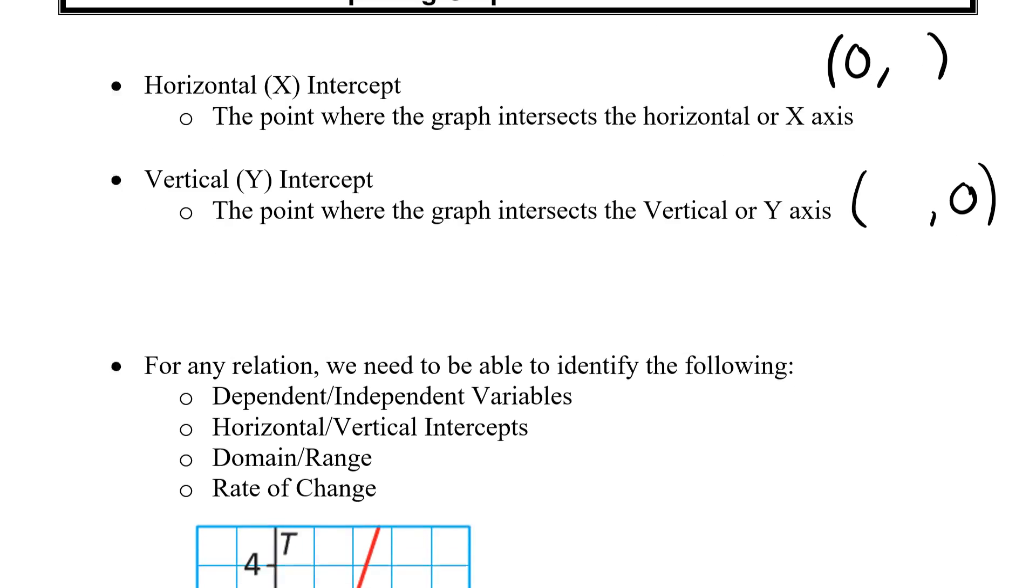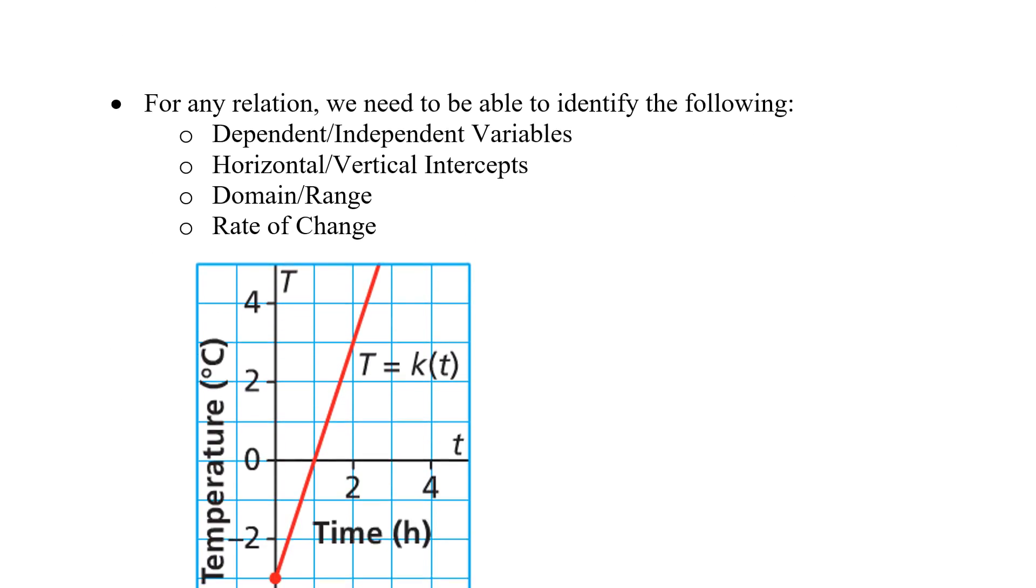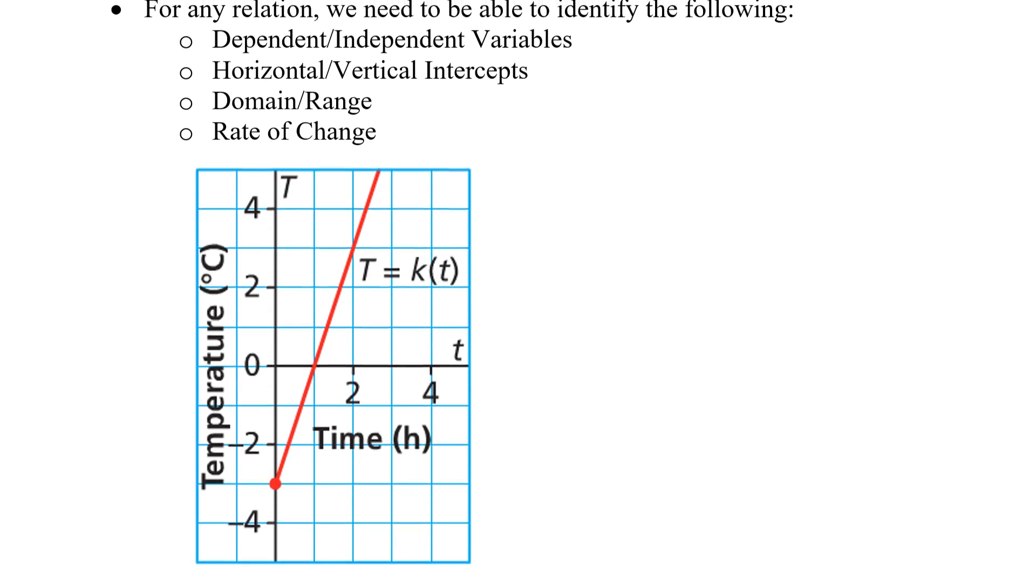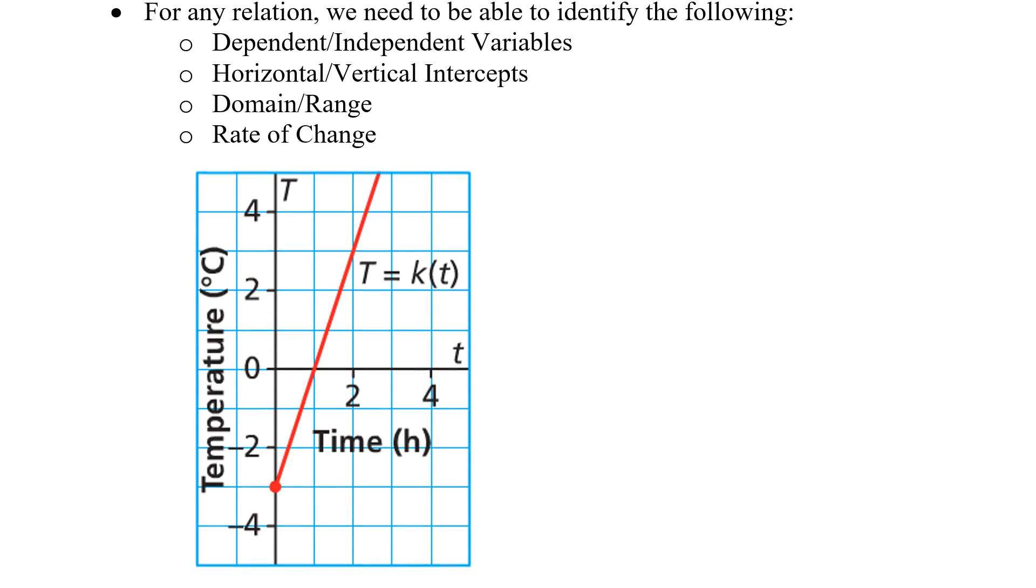Let's take a look at what we already know about our functions. If I give you a graph, we have to be able to identify certain things: the dependent and independent variables, our horizontal and vertical intercepts, our domain and range, and finally our rate of change. Once we know these things, we can easily create a formula from this particular graph.